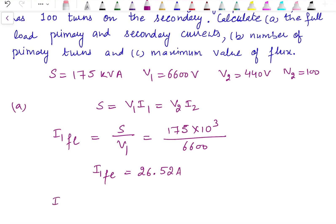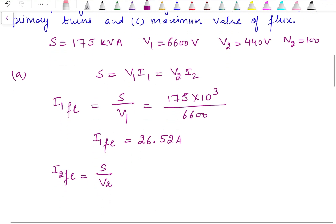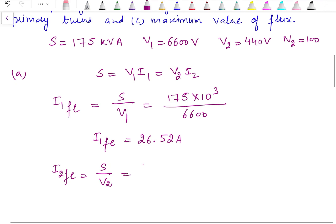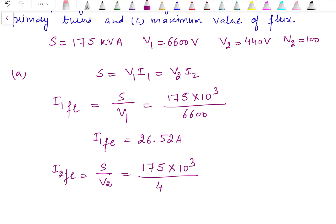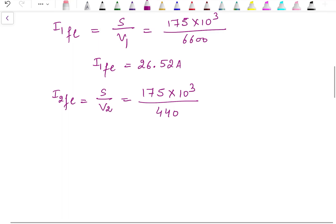Similarly, we can calculate the full load current on the secondary side, which is equal to apparent power divided by the secondary side voltage: 175 × 10³ / 440. So the full load current on the secondary side is 397.73 amperes.